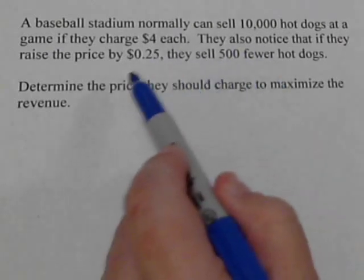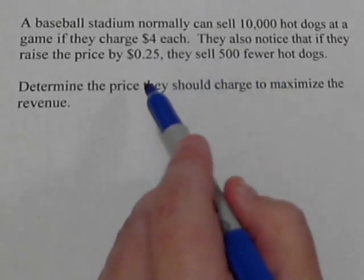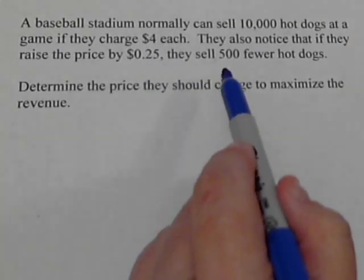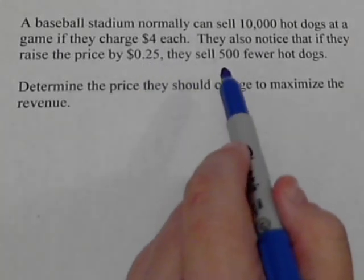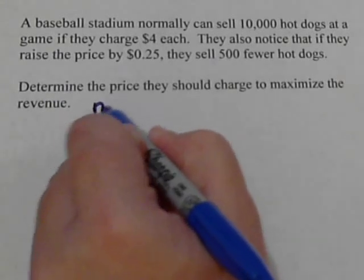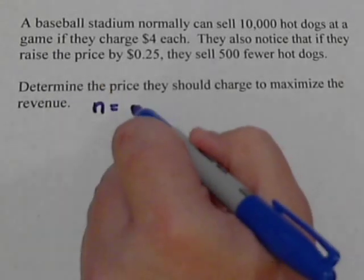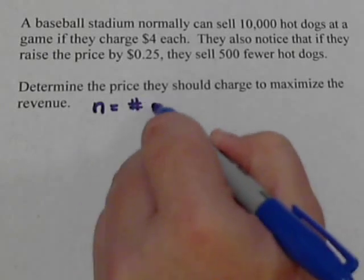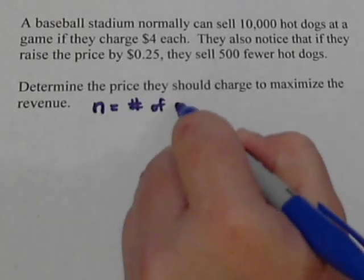They normally can sell 10,000 hot dogs if they charge $4. They've also realized they've tried changing the price and found out that every time they raise the price by a quarter, they lose 500 sales. So we're going to let our n, which is what we're trying to find, stand for the number of price increases.